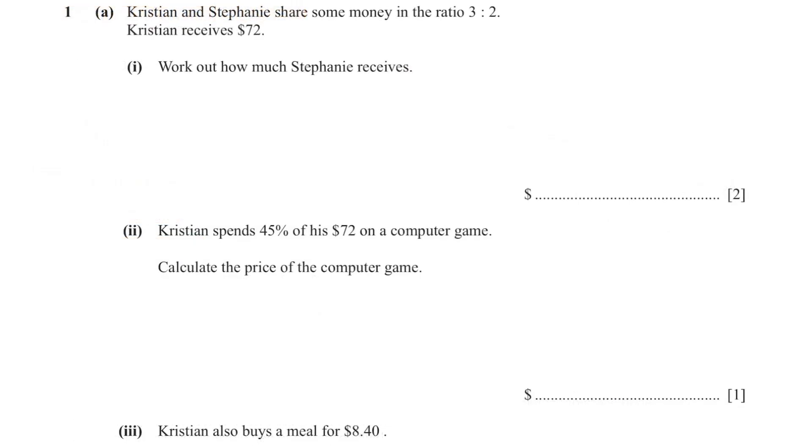Part A. Christian and Stephanie share some money in the ratio 3 is to 2. Christian receives $72. Work out how much Stephanie receives.